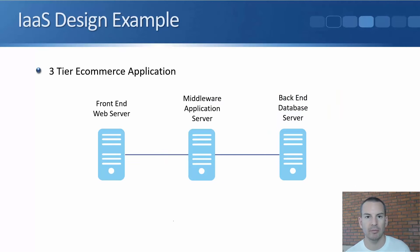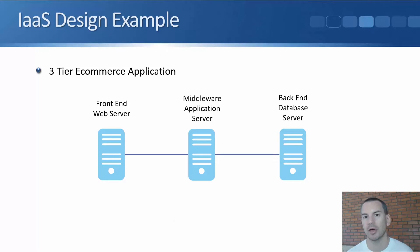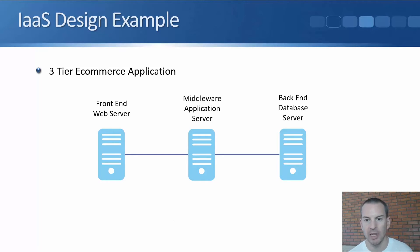Let's have a walkthrough of doing this. In the example, I'm going to use a pretty standard three-tier e-commerce application. We've got the web servers at the front end that customers out on the internet are going to connect into, then traffic goes through to our middleware application server, and then we've got a database server at the back end.